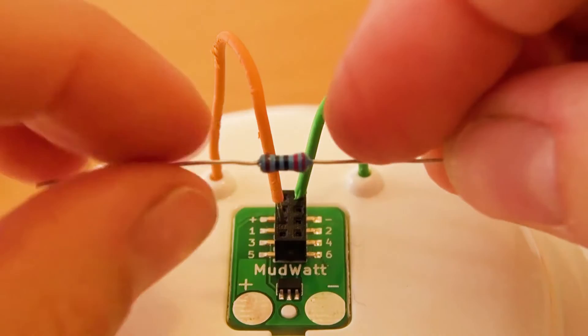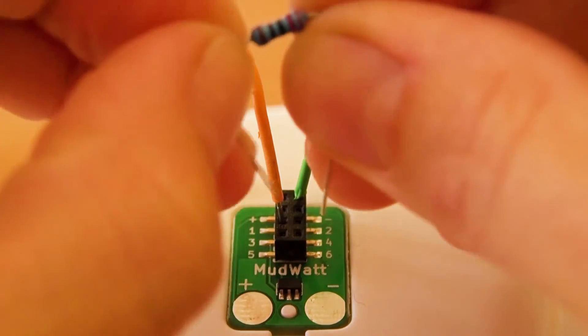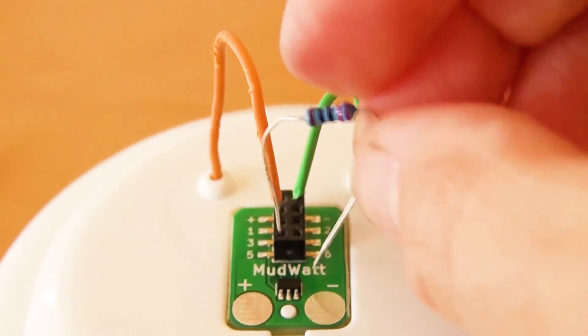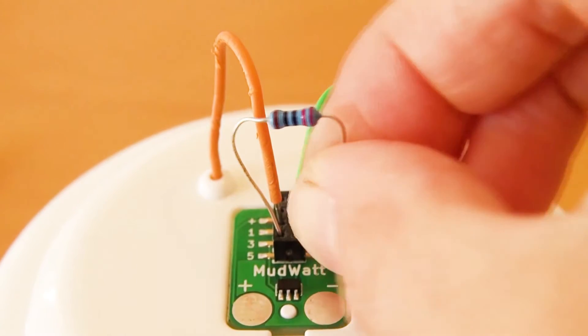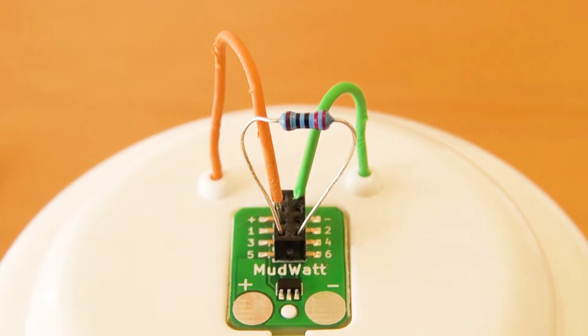Then take the first resistor that you are going to use and bend it on both sides. Plug one end into pin 5 and the other end into pin 6. The orientation does not matter.